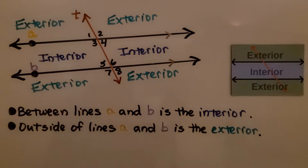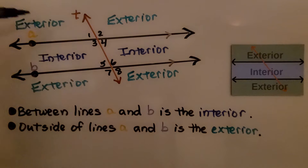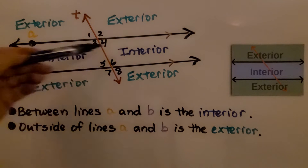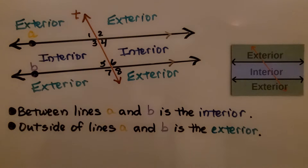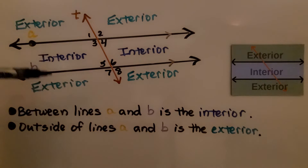There is an exterior and an interior to this diagram with the parallel lines and the transversal. The exterior is on the outside of the parallel lines, and the interior is on the inside — between lines A and B. Outside of lines A and B is the exterior.